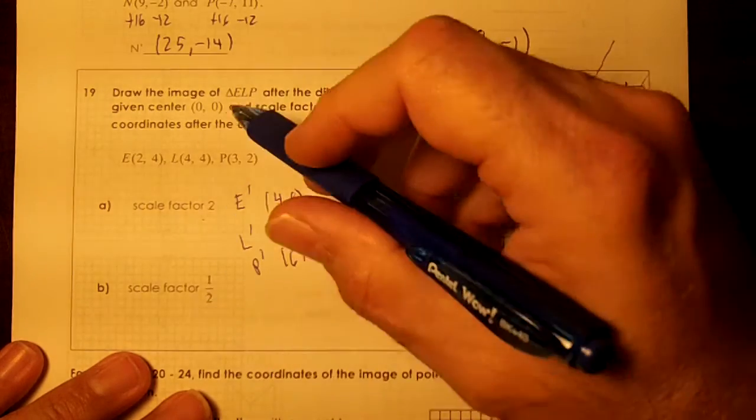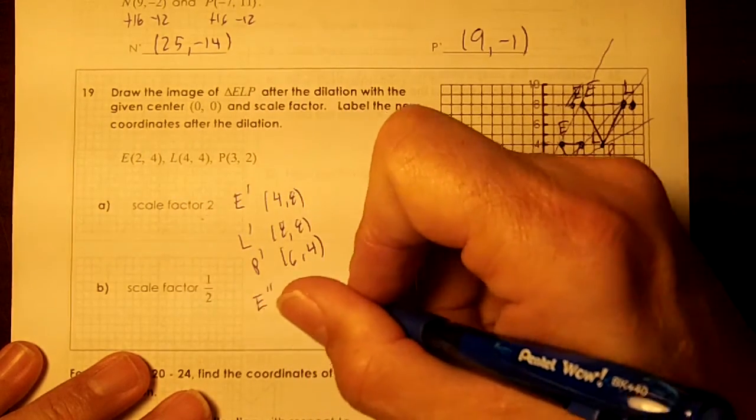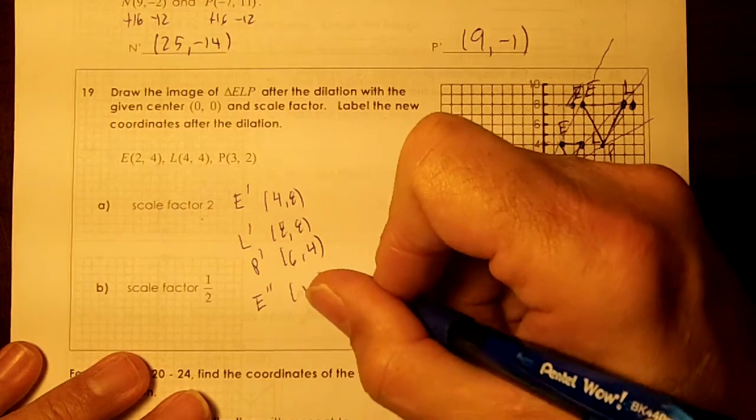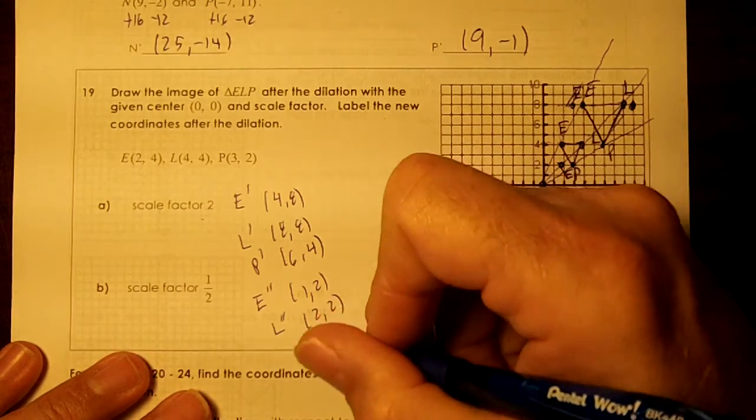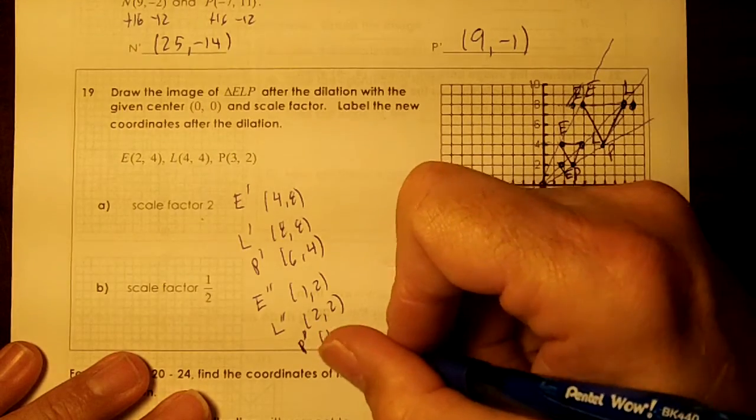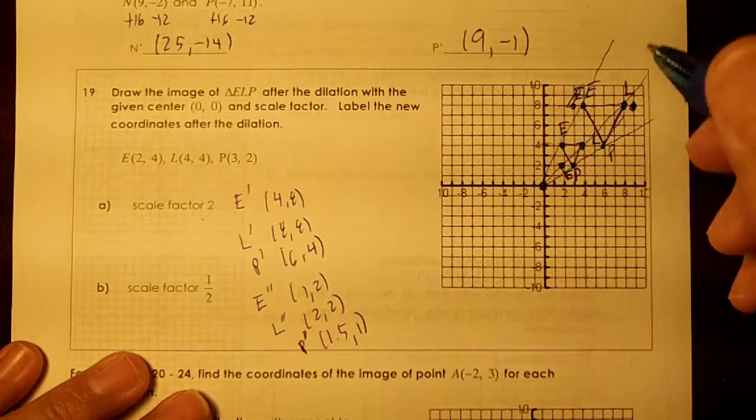Now we're going to do a scale factor of 1 half. So our E double prime would be 1,2. Our L double prime would be 2,2. And our P double prime would be 1.5, 1.